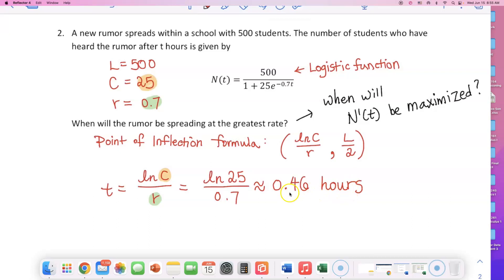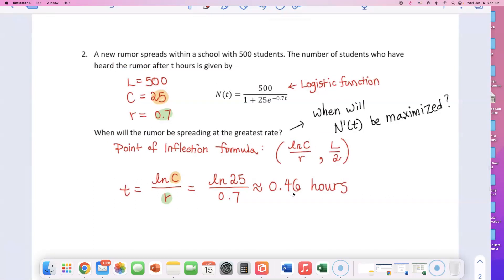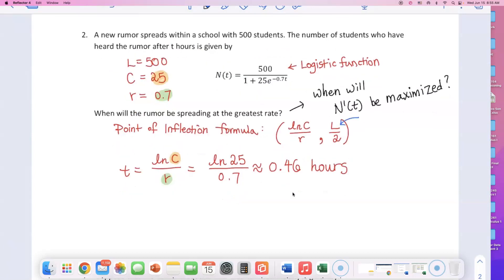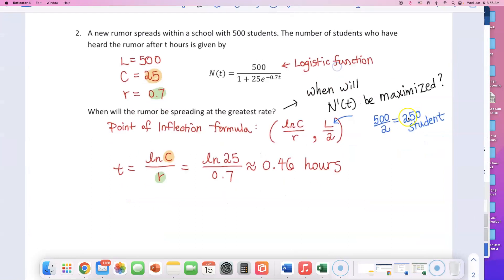But that's how you can find the moment the rumor will be spreading at the greatest rate. At this time, how many people will know about this rumor if you wonder, not that they were asking for it. But if you use the second coordinate, L is 500. If you do 500 divided by 2, that's 250 students. So after 0.46 hours, after 28 minutes, 250 students in this school will know about this rumor. And that is when this rumor is spreading at the fastest or greatest rate. After that, it's going to slow down because more people know about this rumor than don't know about it. So of course, it can't spread as fast.